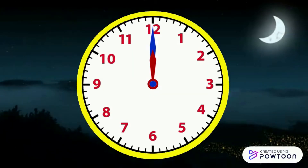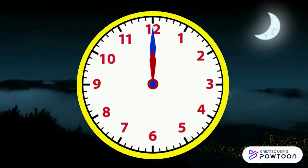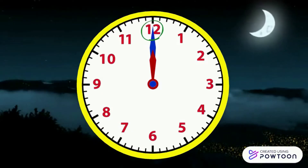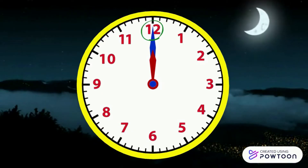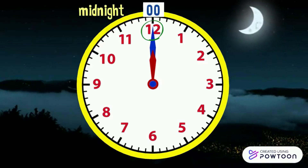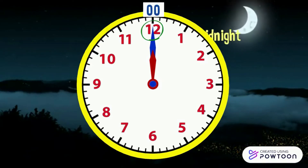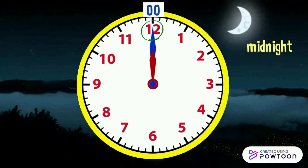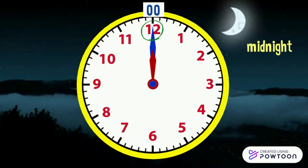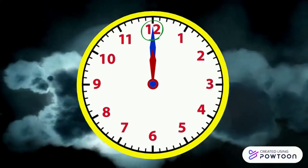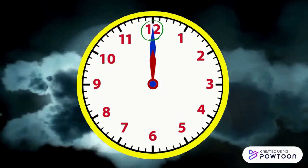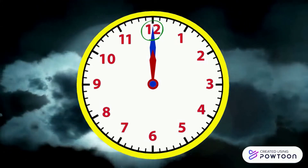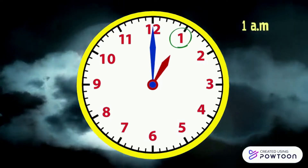The day begins when the two hands are on 12 — we are at the beginning. It is zero o'clock, but we say midnight. Outside it is dark. At midnight a day ends and a day begins. Then we start with the hours in red: it's 1 AM.